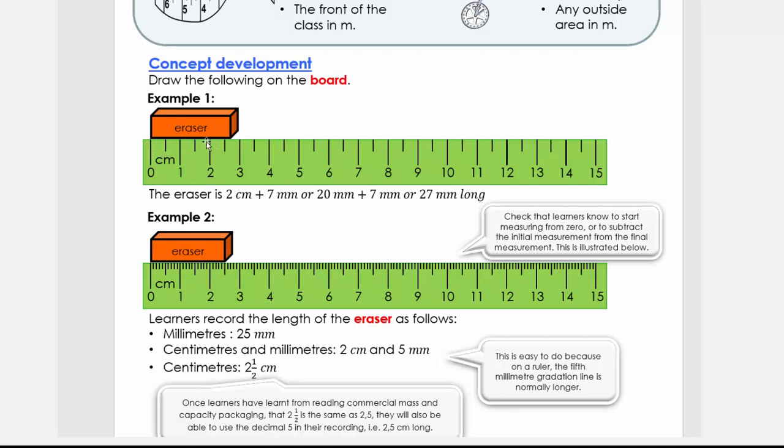So if we look at this eraser, it's more or less two centimeters and seven millimeters. So we can say the two centimeters is then 20 millimeters. Remember, use your ruler to help them to convert. And then what we have is seven millimeters. If we then add the 20 millimeters and the seven millimeters, we get 27 millimeters.